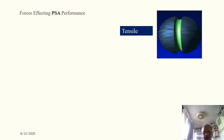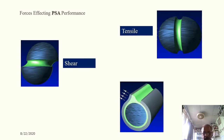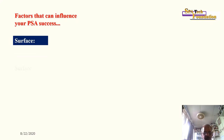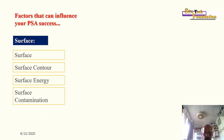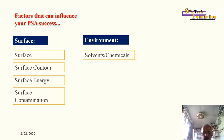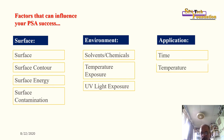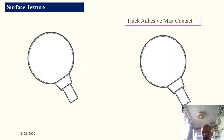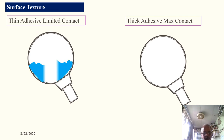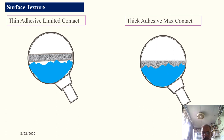The three forces affecting PSA are tensile, shear, and peel. Factors that influence PSA success include surface contour, surface energy, surface contamination, environment, solvents and chemicals, temperature exposure, UV light exposure, and application time, temperature, and pressure.